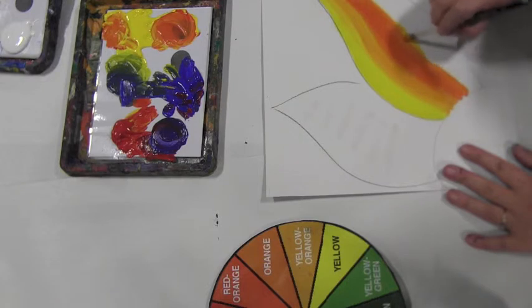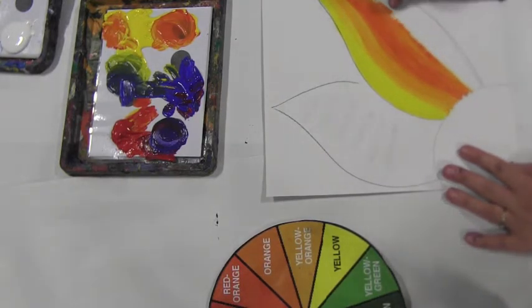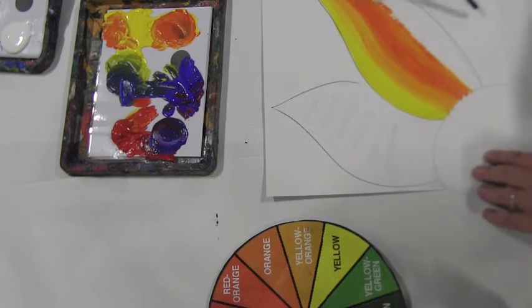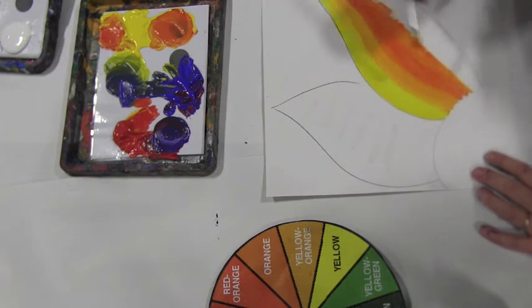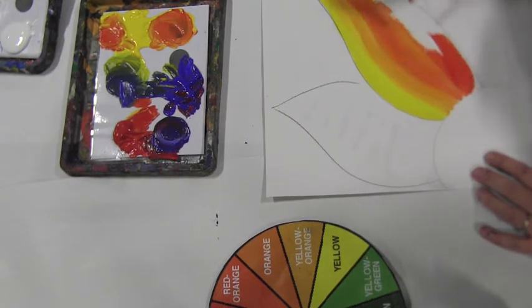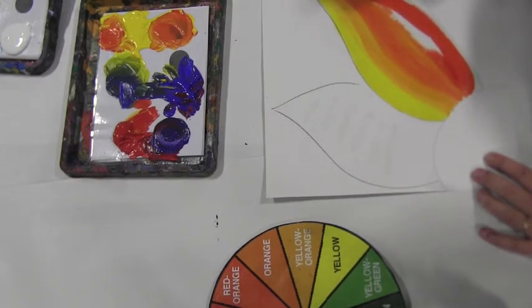If you're getting a very dry edge, as you can see there, you just need to add a little bit more water and a little bit more paint to your brush. And because my flower is changing the angle, I'm following the curve of the flower in the opposite direction now.